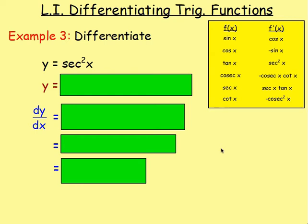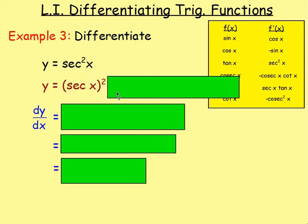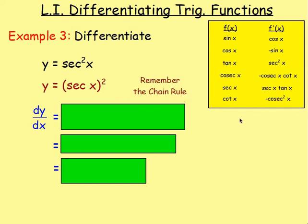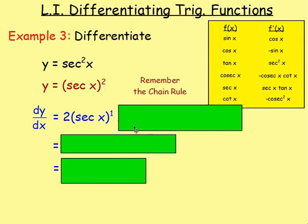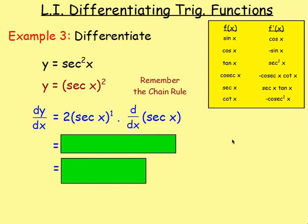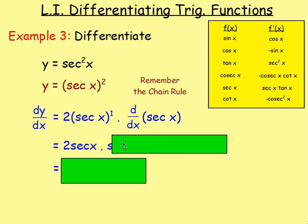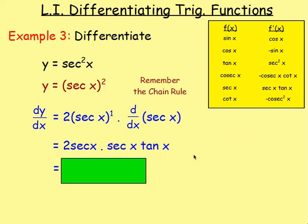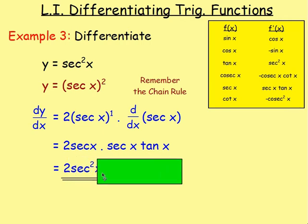Example 3: differentiate y equals sec²(x). sec²(x) means the sec of x, squared. Apply the chain rule — differentiate outside the brackets: the 2 comes down, inside stays, and the power decreases to 1, giving 2 sec(x). Then differentiate what's in the brackets: the derivative of sec x is sec x tan x. So you multiply by sec x tan x. You then have 2 times sec x times sec x, which is 2 sec²(x), multiplied by tan x. That is what you would get.